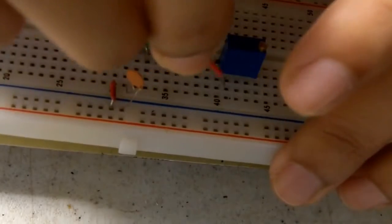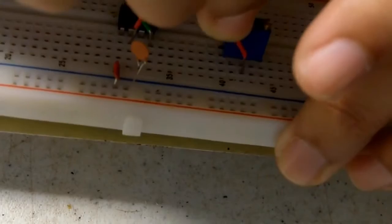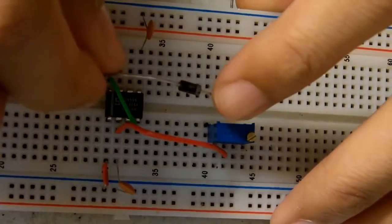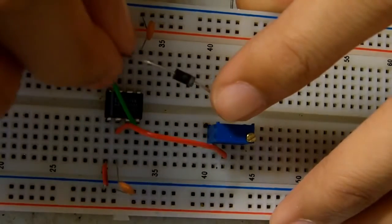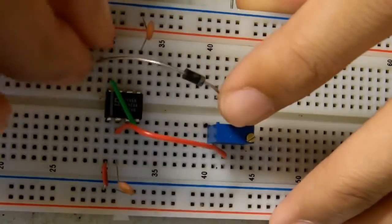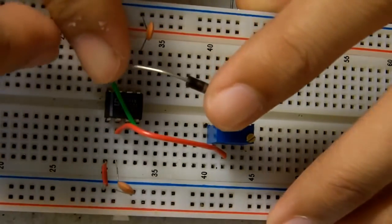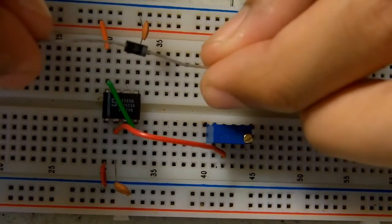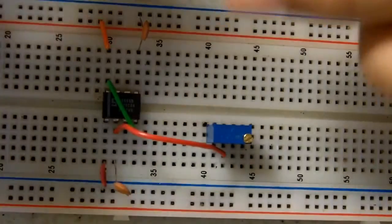Make sure that when you put in the diodes, they go in opposite directions. If you see the little white strip, when you put it in, make sure one goes this way and the other one will go this way.